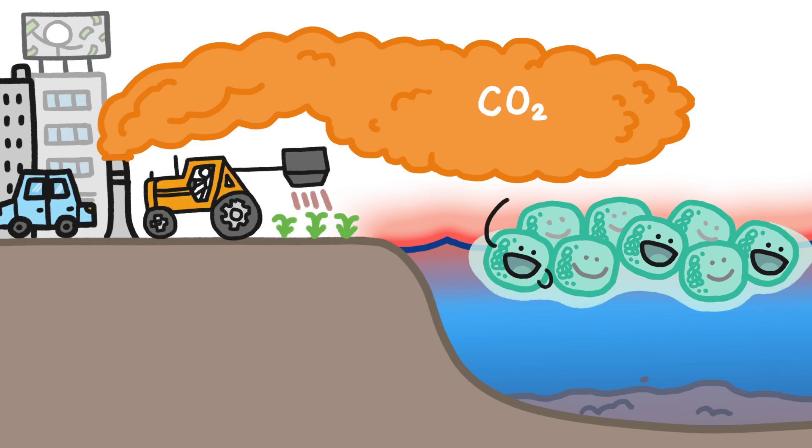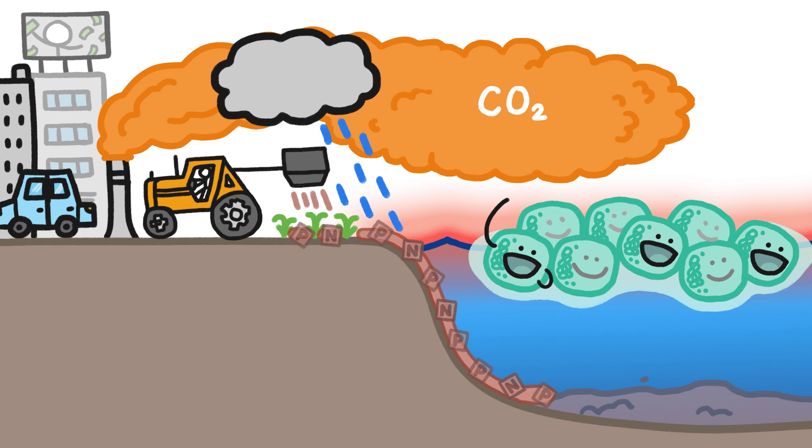Also, because we over-fertilize our farm fields, the rain washes a lot of that fertilizer into rivers and oceans, providing a level of delicious nutrients that cyanobacteria haven't seen for perhaps billions of years.